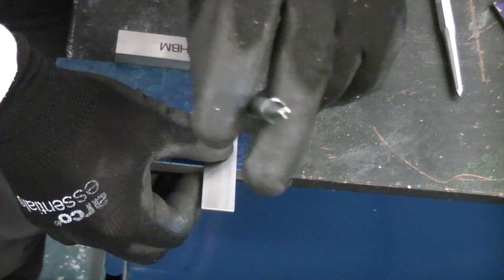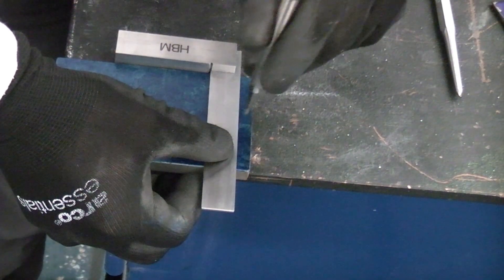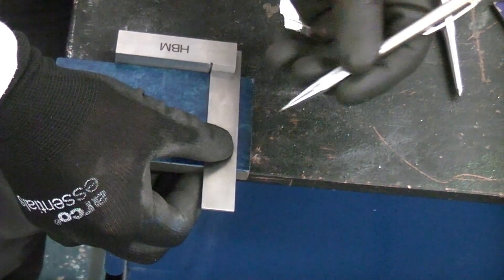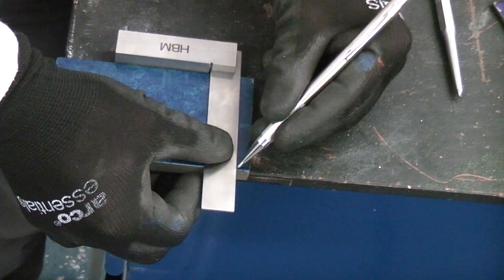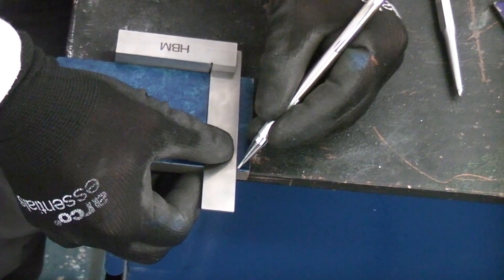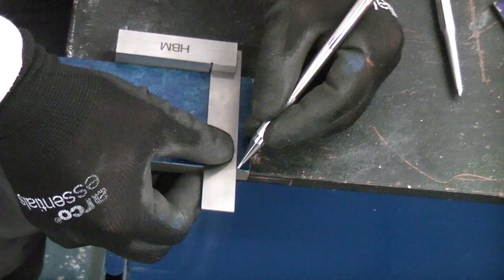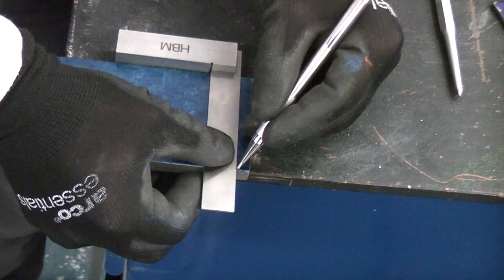To do that we're going to be using this scriber. When you use a scriber you don't hold it straight up, you need to make sure that the point goes straight into the bit that you are marking. So you get the point very exact, so you get a very exact scribe line.